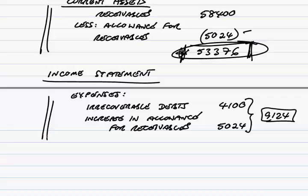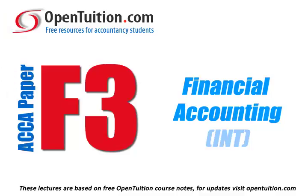The income statement and the statement of financial position come from the T accounts, so we need to look at the debits and credits necessary to end up with what we want. We'll do that in the second session for this chapter. Thank you.